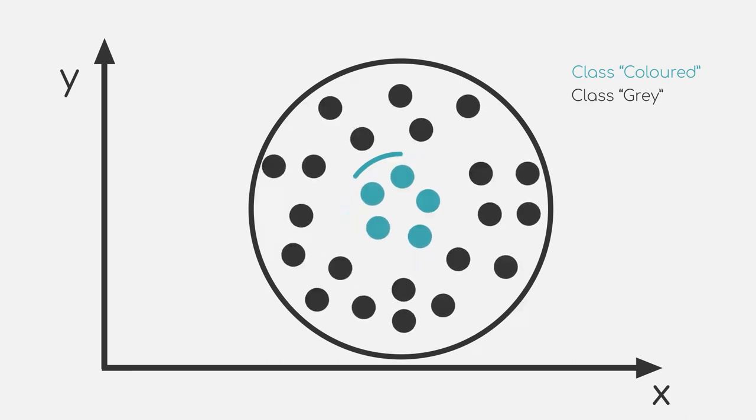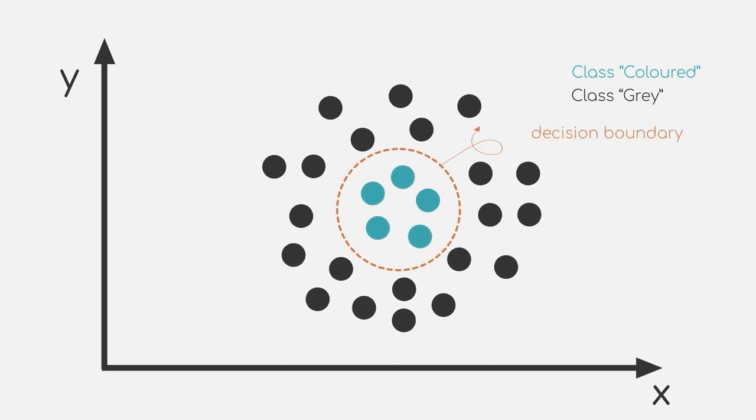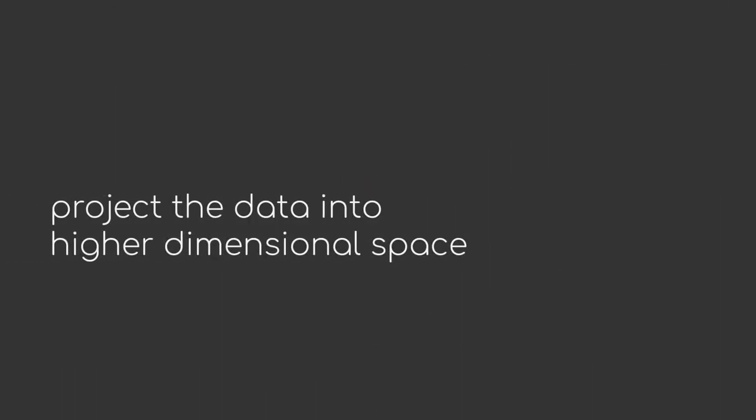How do we find a model that is able to separate those two classes? A first possibility would be to fit a polynomial of higher degree, which is able to form a decision boundary in the form of a circle that lies in between our two circles. But can we do it using only a linear function? This would be much less complex and therefore more convenient for us. The trick here is to project the data into higher dimensional space.